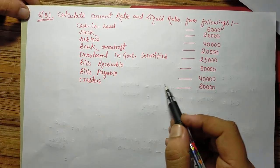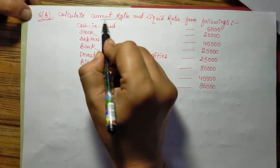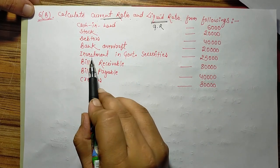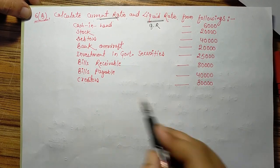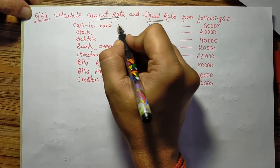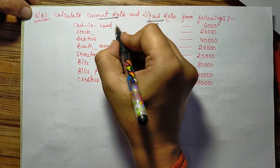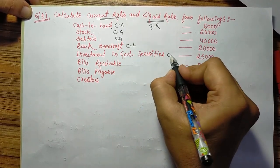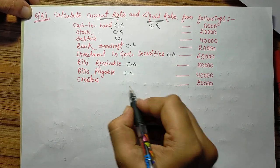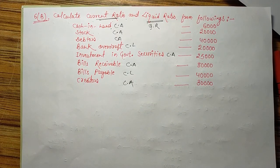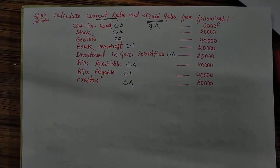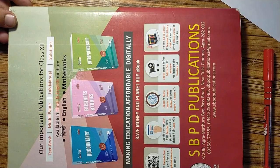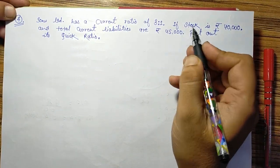Question 6B: Calculate current ratio and liquid ratio. Items given — cash in hand, stock, debtors, bank overdraft, invested in government securities, bills receivable, bills payable, creditors. Classify each: cash in hand → current asset; stock → current asset; debtors → current asset; bank overdraft → current liability; government securities → current asset; bills receivable → current asset; bills payable → current liability; creditors → current liability. Then apply the same method to find current ratio and liquid ratio.